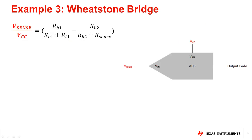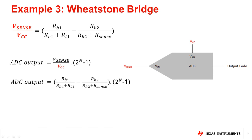To cancel out the effect of VCC, we utilize the VCC for our ADC reference supply. By doing this, the ratio between Vsense and VCC will make our sense the only variable in the measurement. Therefore, the accuracy of the measuring system in this case becomes a function of the passive components used in the bridge.